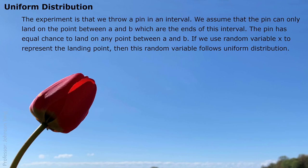The typical experiment for uniform distribution is that we throw a pin in an interval. We assume that the pin can only land on a point between a and b, which are the ends of this interval. The pin has equal chance to land on any point between a and b. If we use random variable x to represent the landing point, then this random variable follows uniform distribution. The pin can only be thrown between a and b — that's the interval.